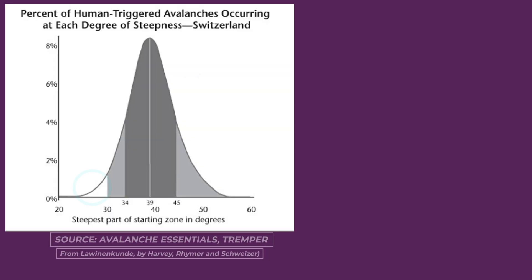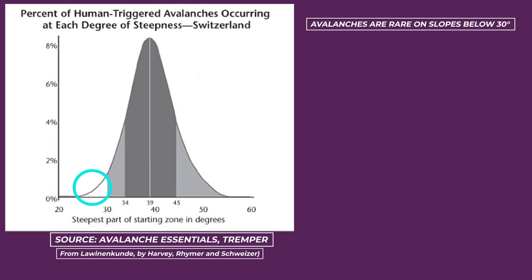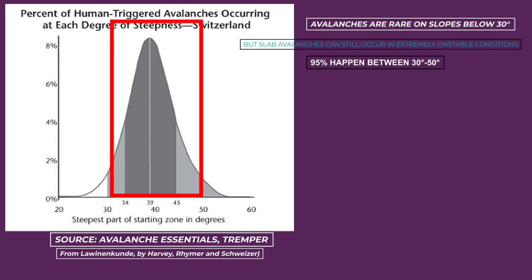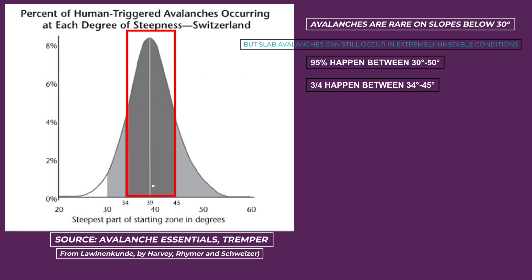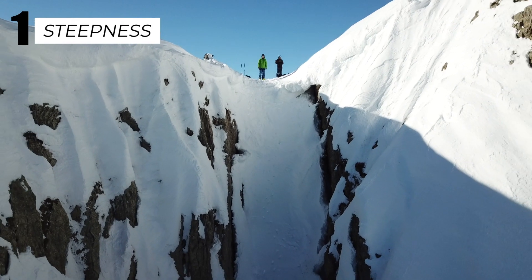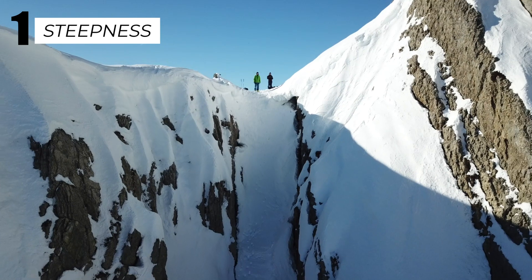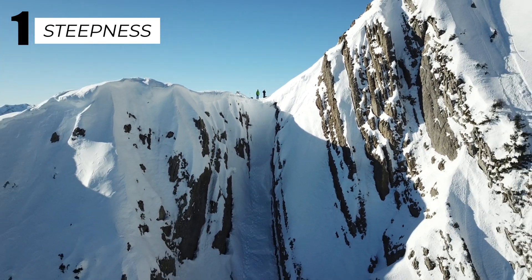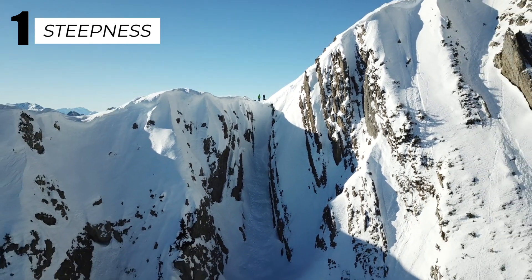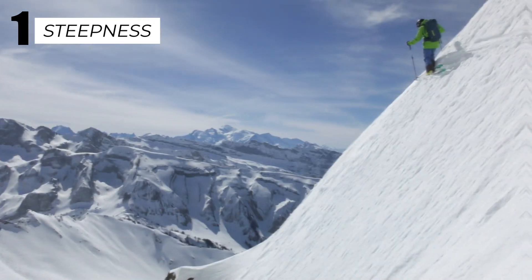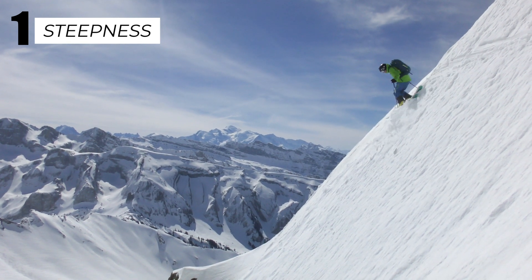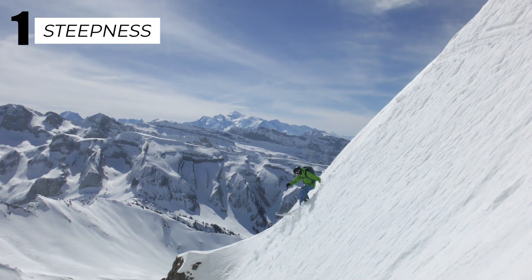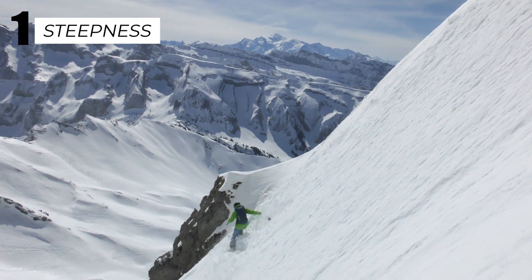Dangerous avalanches are rarely triggered on slopes below 30 degrees. About 95% of avalanches initiate on slopes between 30 to 50 degrees, and about three quarters of avalanches started in an even smaller window of between 34 to 45 degrees. On slopes above 45 to 50 degrees, the avalanche danger appears to decrease — but don't be fooled. On these steeper slopes, a higher frequency of smaller slides effectively cleans the slope, preventing the build-up necessary for larger slab avalanches.